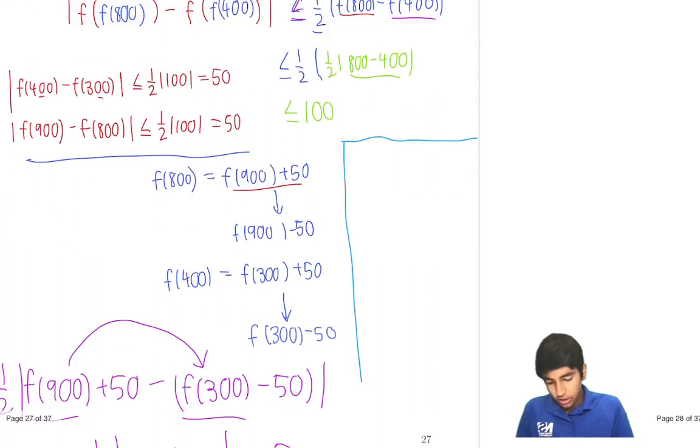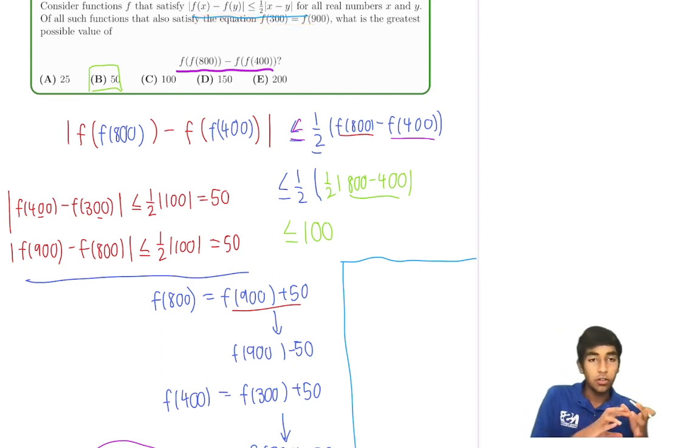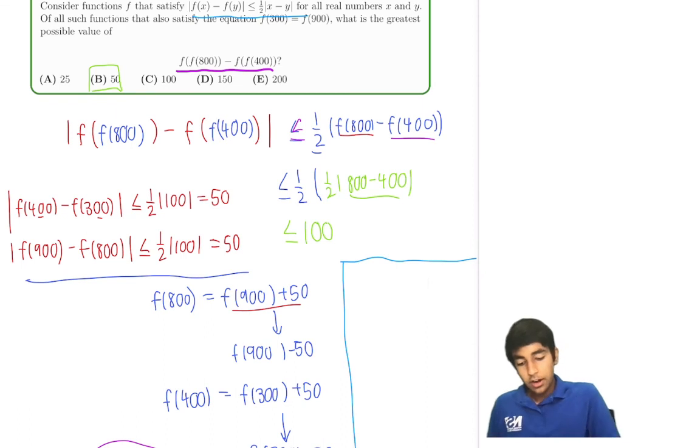So essentially we've already deduced that because we've already used this condition and this condition, there aren't really any other conditions for us to use to give us an even stricter bound. Now this is not an actual proof but it's a good way to reason and understand why this is true because this condition we used it many times.